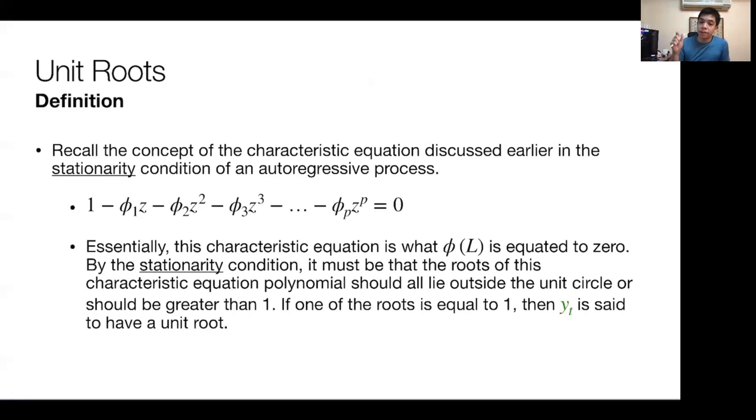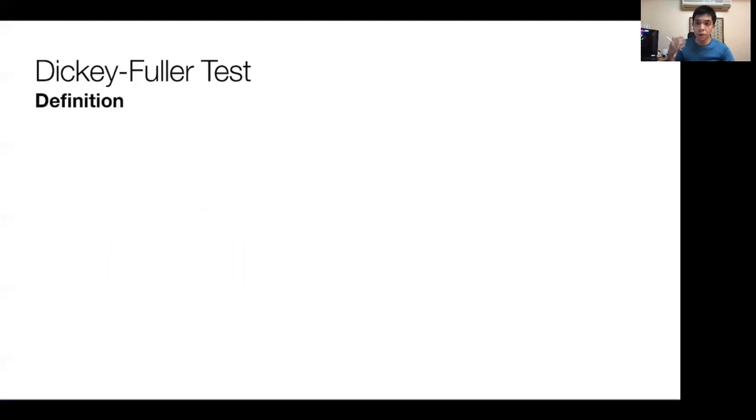This characteristic polynomial on the left-hand side is equated to zero to get the characteristic equation. By Wold's Decomposition Theorem, by the stationarity condition, all the characteristic roots of the equation should lie outside the unit circle or should be greater than one. If one of the roots is equal to one, then y is said to have a unit root.